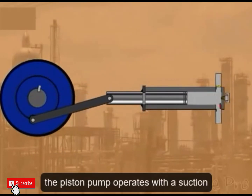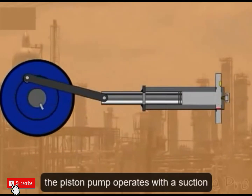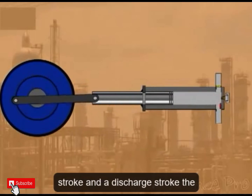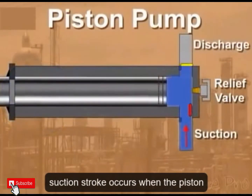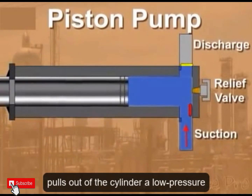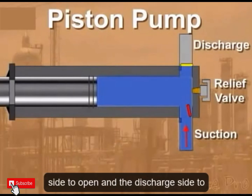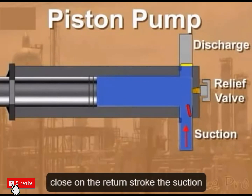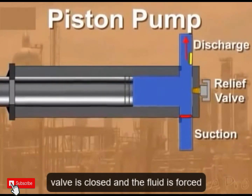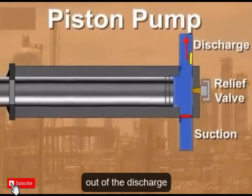The piston pump operates with a suction stroke and a discharge stroke. The suction stroke occurs when the piston pulls out of the cylinder, creating a low pressure vacuum that causes the suction side to open and the discharge side to close. On the return stroke, the suction valve is closed and the fluid is forced out of the discharge.